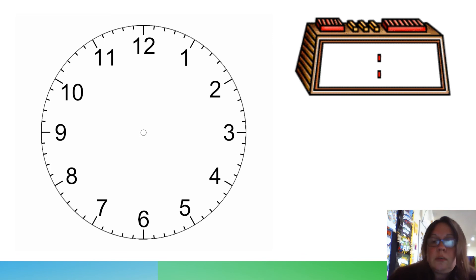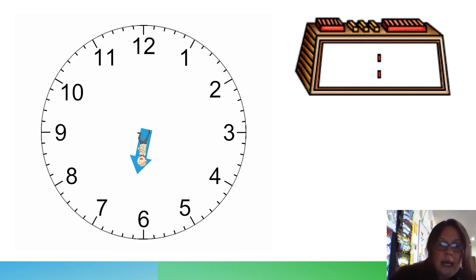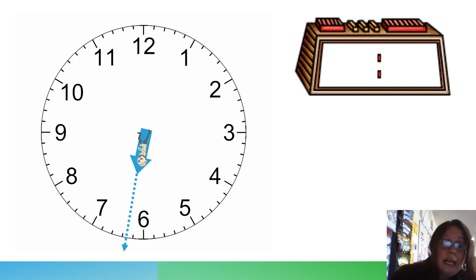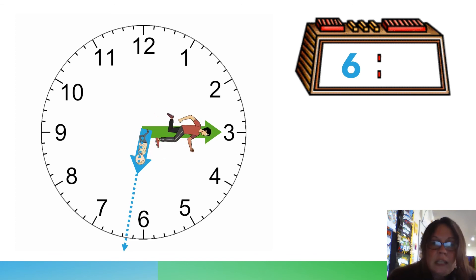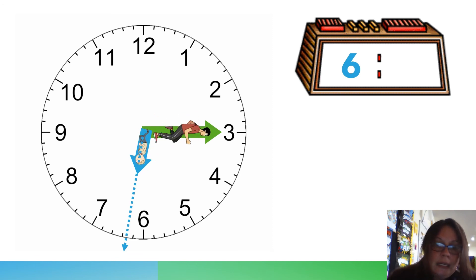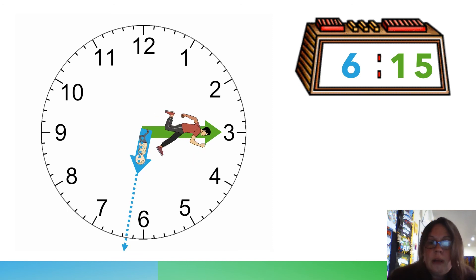Let's do some review and practice. We start with our hour hand — we look at the actual numbers and extend the line out a little bit to see that it is in the six o'clock hour. It's after 6, not touching 6, but not touching 7 yet either, so we say it's part of the six o'clock hour. Now let's look at the minute hand — it's pointing to the 3. We count by fives: one is five, two is ten, three is fifteen minutes. So our time is 6:15.